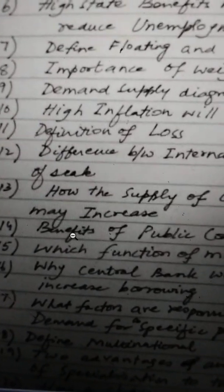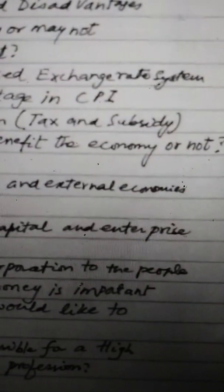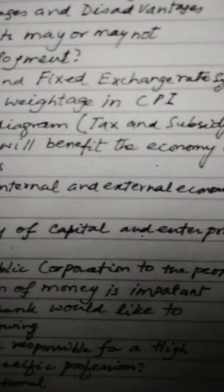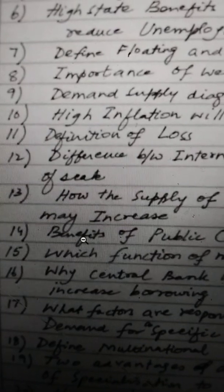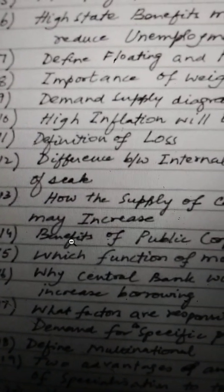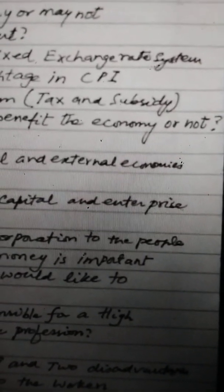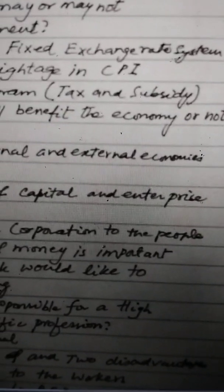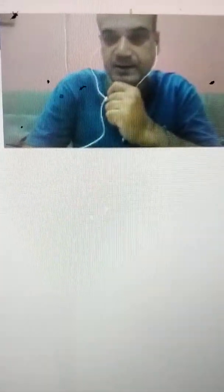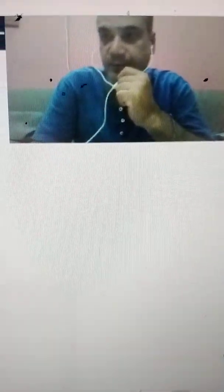External economies of scale is when the average cost of production is decreasing for the entire industry and a large output is produced for the entire industry. This happens because of outside external factors such as the growth of the entire industry benefiting all firms, government provision of infrastructure, and firms locating near to each other. All these are external economies of scale.